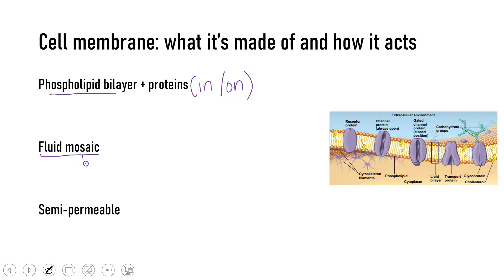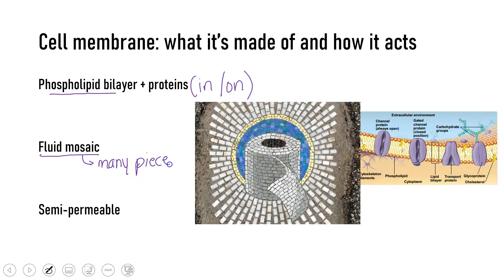We also call it a mosaic because it is made of many different pieces. A mosaic in art is where they use little tiles to make a great big image. With the cell membrane, we use many pieces to make a great big cell membrane.